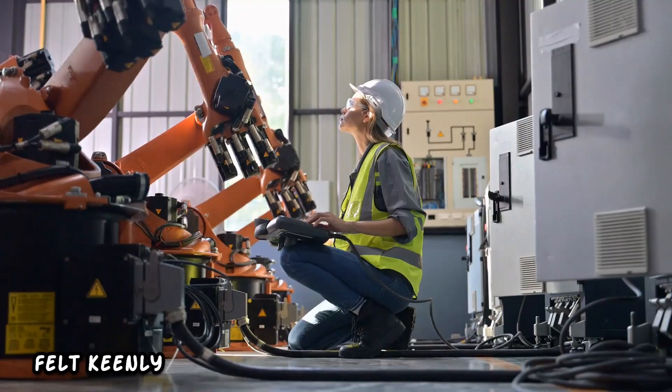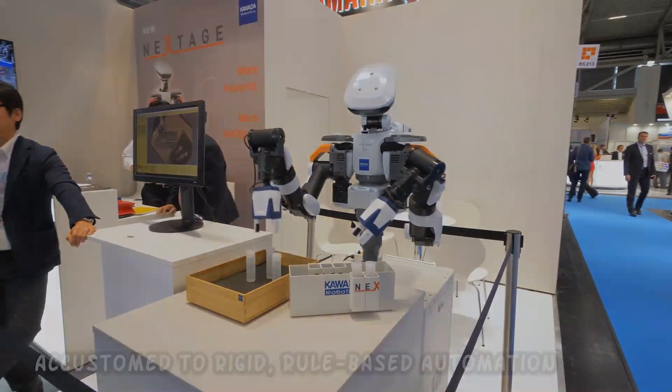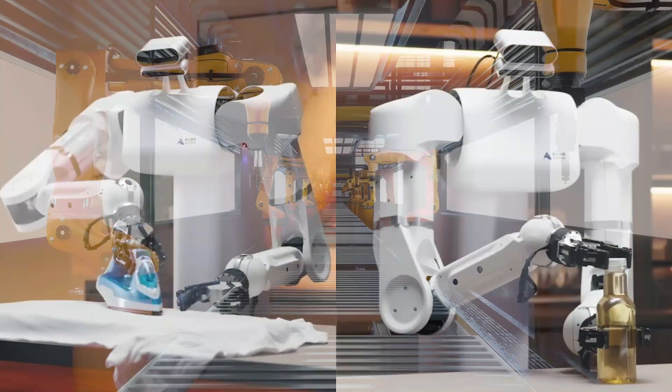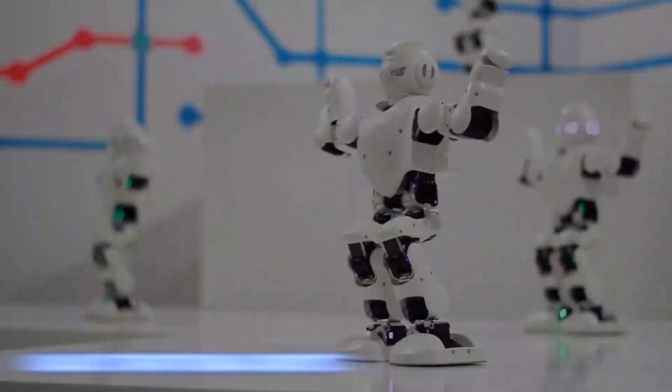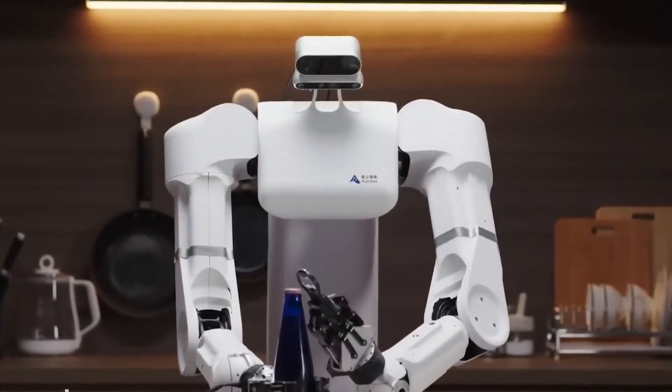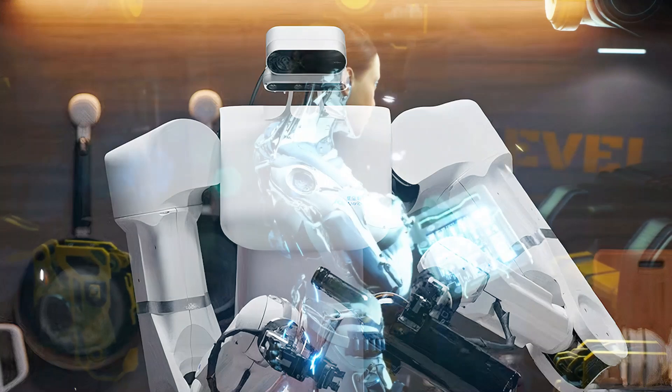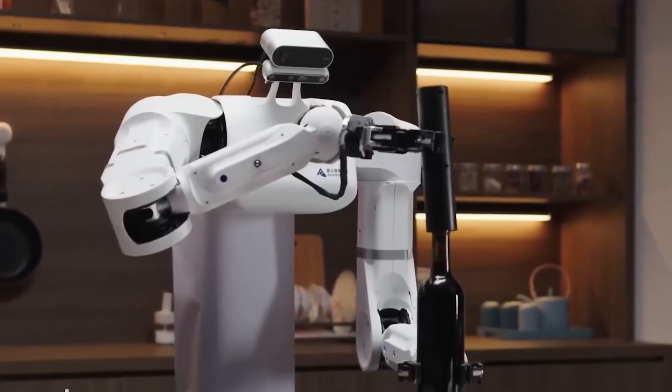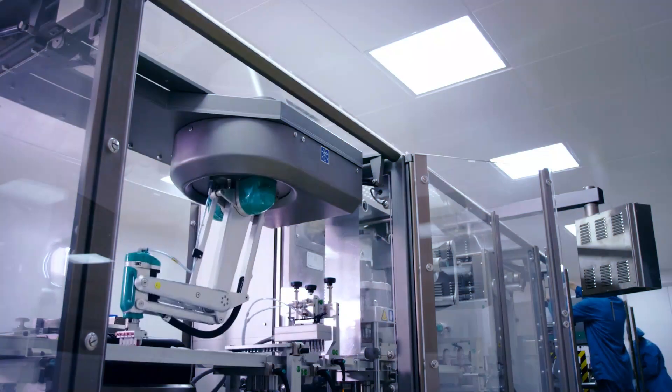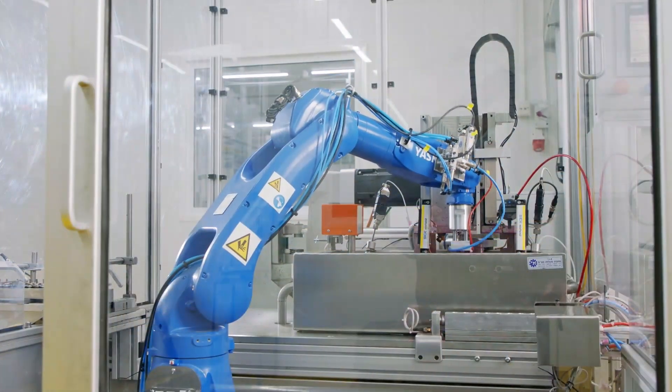Astrobot's impact is felt keenly in industries accustomed to rigid, rule-based automation. Its ability to learn and adapt autonomously heralds a new era of flexibility and agility. Unlike traditional robots confined by programmed instructions, Astrobot navigates complex environments with finesse, continuously refining its approach based on real-time feedback. This adaptability translates into heightened efficiency and reduced downtime, offering companies a pathway to unparalleled productivity gains.